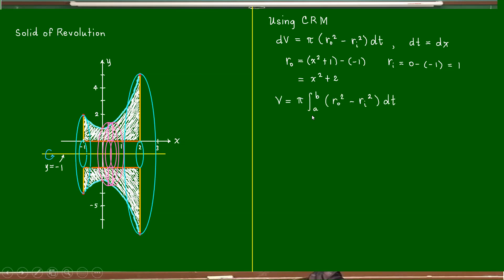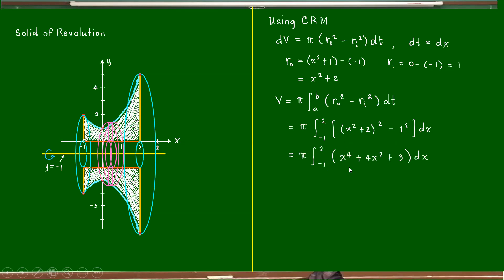Hence, the volume equals pi integral from a to b of outer radius squared minus inner radius squared, times dt. This equals pi integral from negative one to two — negative one being the leftmost value of x and two the rightmost value. So we have pi integral from negative one to two of x squared plus two quantity squared minus one quantity squared, giving x squared plus two quantity squared minus one squared, times dx.